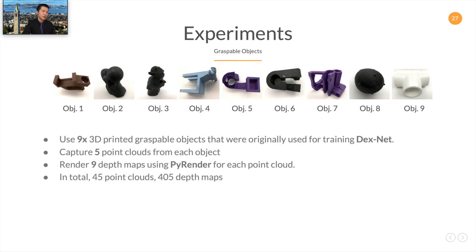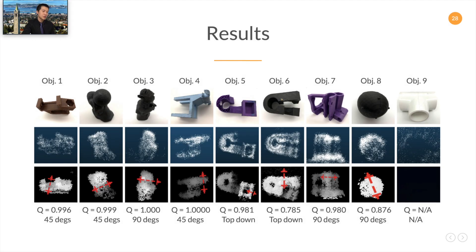Let's look at experiments. We use nine 3D printed objects, which were originally used to train DexNet. For each object, we capture five full point clouds and render nine depth maps for each point cloud based on the nine viewpoints. Therefore, we have 45 point clouds and 405 depth maps in total. Here we show the results of DexNet on all nine objects. The images on the top row are the ground truth objects, the middle row are the point clouds, and the bottom row are the planned grasps from the best viewpoint, which has the highest Q value. Note that object nine is a failure case because it is too reflective.